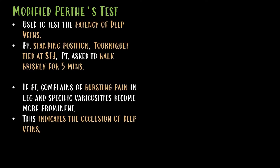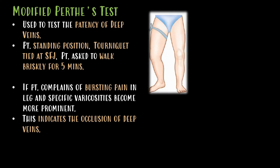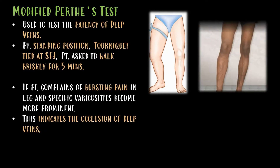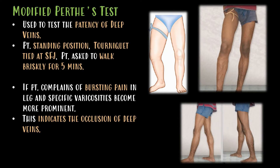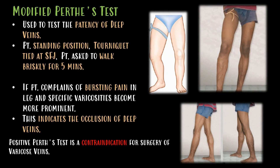The modified Perth test is used to test the patency of the deep veins. The patient is in standing position and a tourniquet is tied at the saphenofemoral junction. The patient is asked to walk briskly for five minutes. If the patient complains of bursting pain in the leg and specific varicosities become more prominent, this indicates occlusion of the deep veins. A positive Perth's test is a contraindication for surgery of varicose veins.